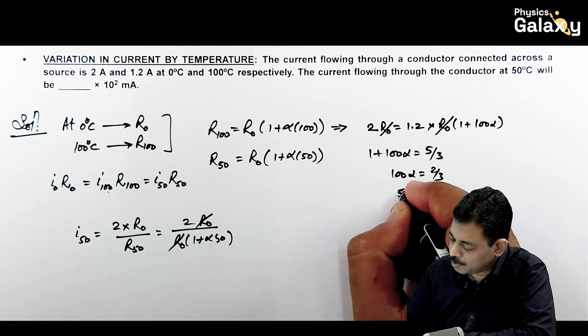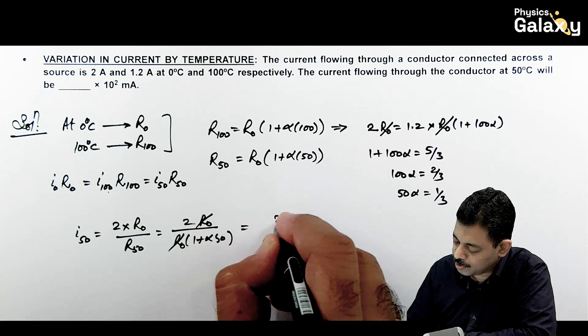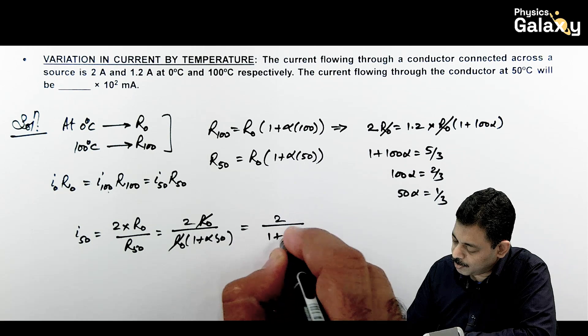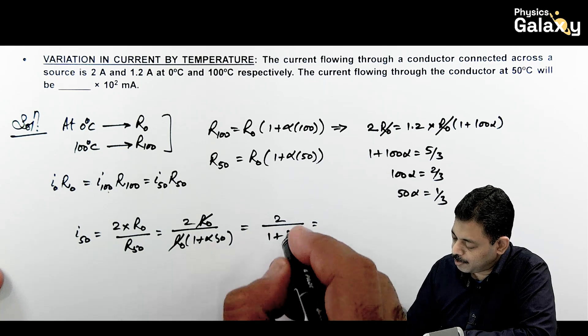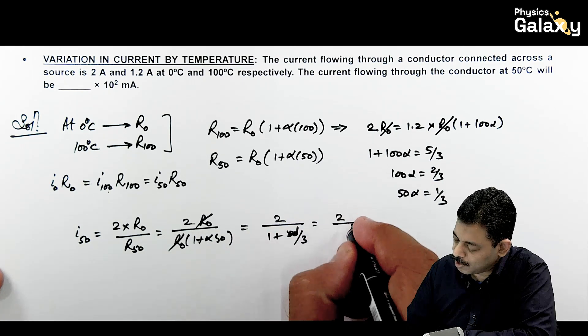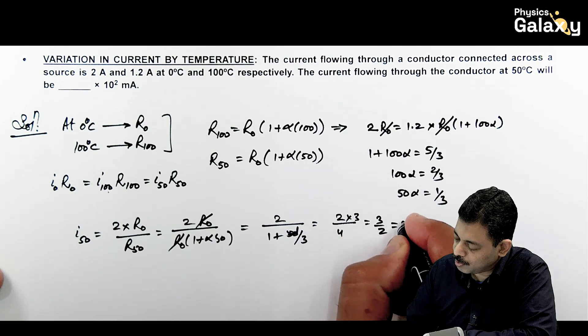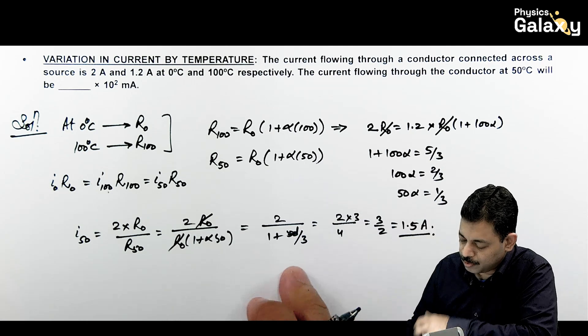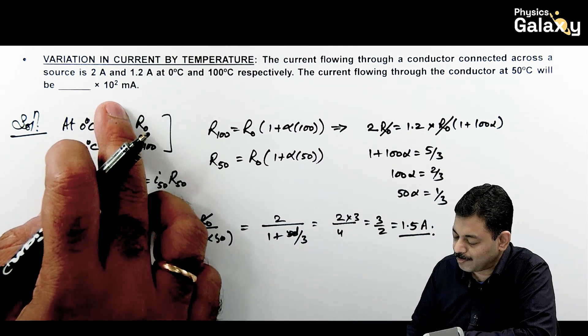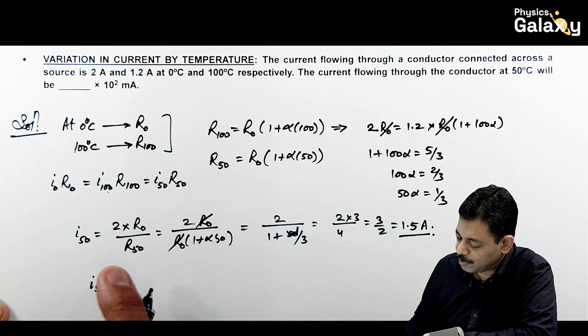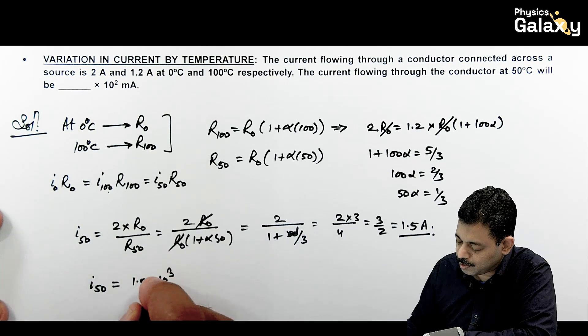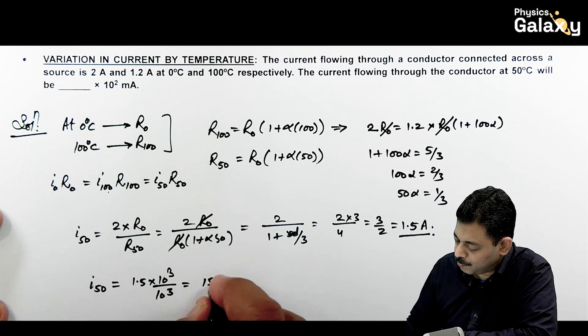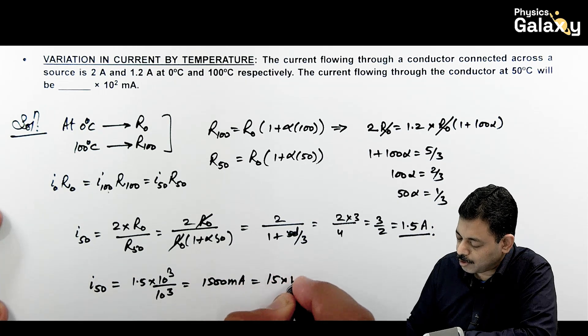If I substitute it here, this is 2 divided by (1 + 1/3), so here it becomes 2 divided by 4/3. This comes out to be 3/2 or 1.5 ampere. The question is asking about the value in milliampere, so this current at 50°C is 1.5 ampere. Converting to milliampere: 1.5 × 10³ = 1500 milliampere. This is 15 × 10² milliampere, that is the answer to this question.